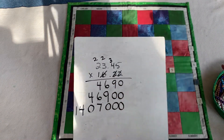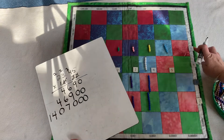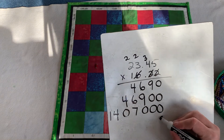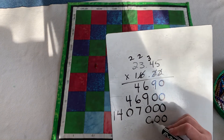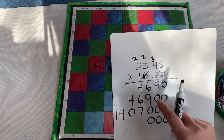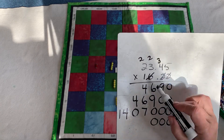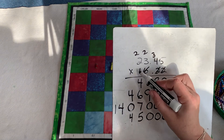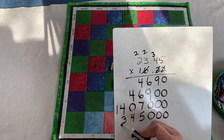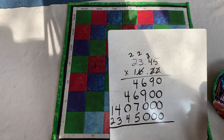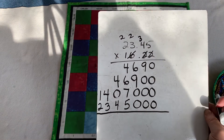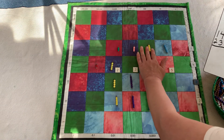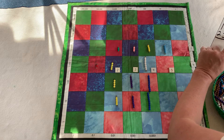Now we've done our first three partial products. We're going to multiply by the tens — that's just by one — but we've moved up three places, so now we're in the tens place. One times five is five. One times four is four. One times three is three. One times two is two. So we have two, three, four, five, and these zeros show that we've gone up this many places.